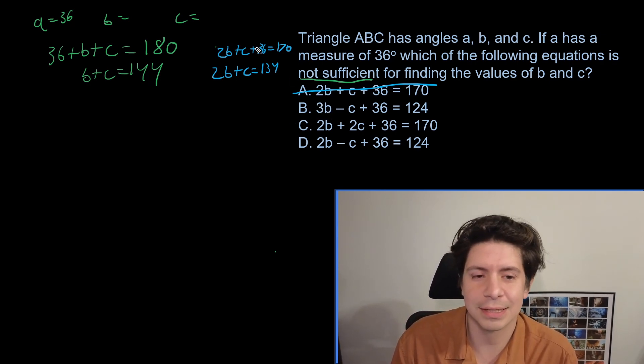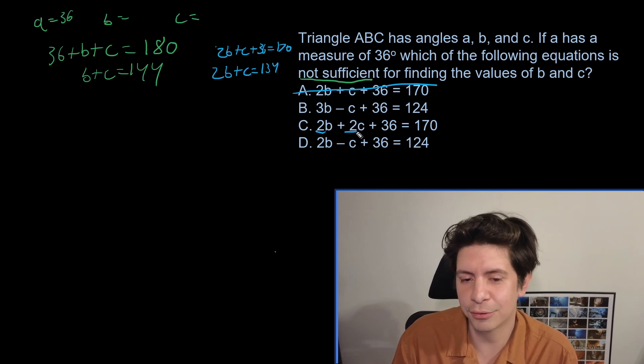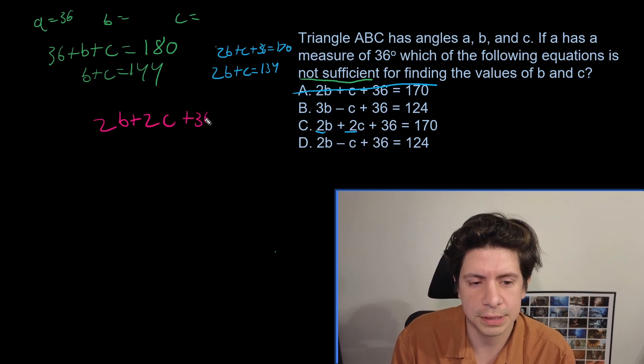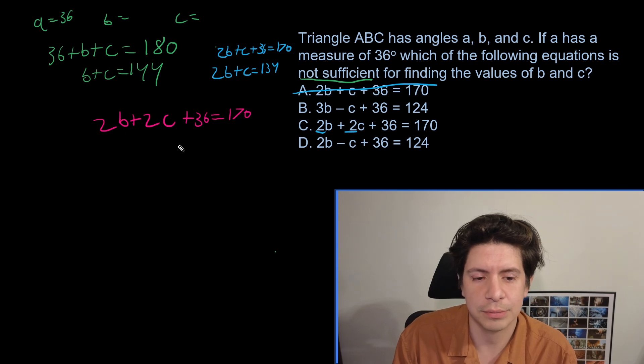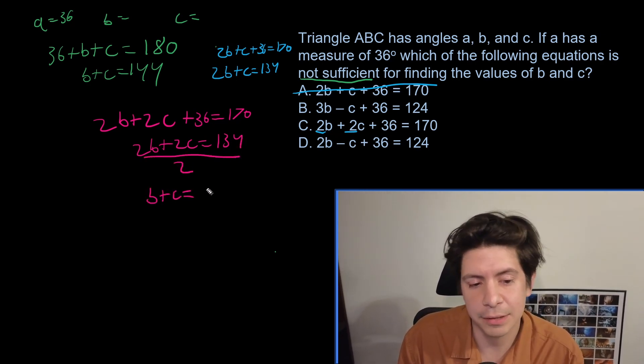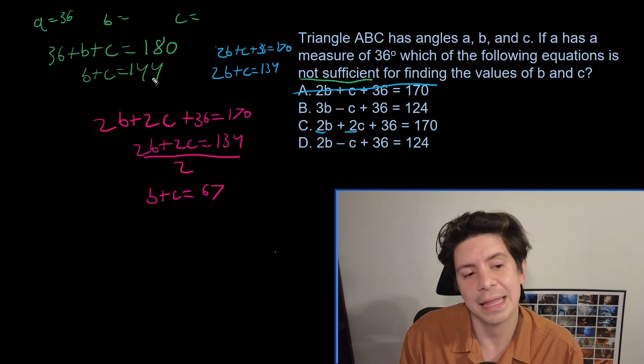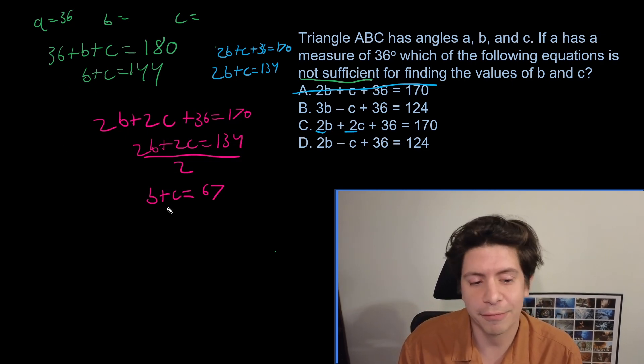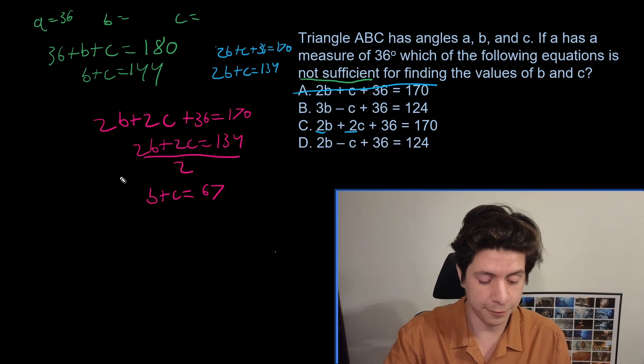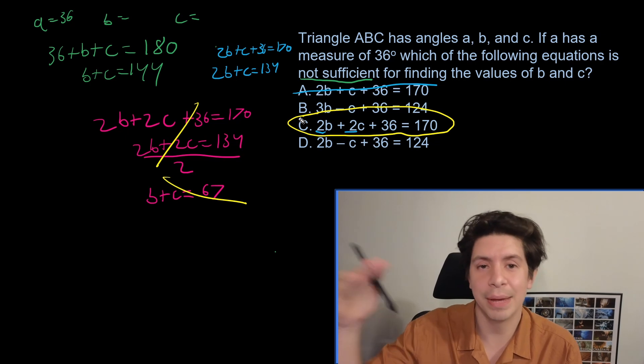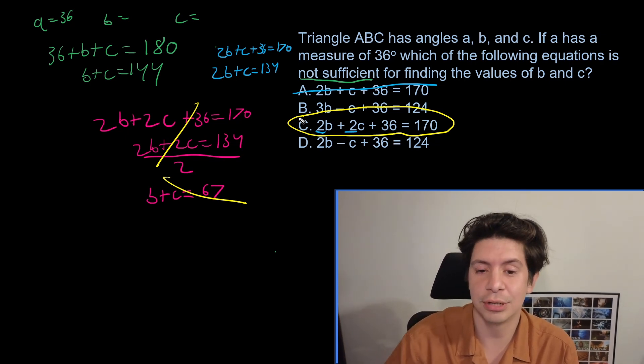So B looks like it's going to be a similar thing to A, but then C is interesting because the two variables are the same. So let's see what happens with C. 2B plus 2C plus 36 equals 170. We subtract by 36 and we get 2B plus 2C equals 134. Divide by 2 and we're going to get B plus C equals 67. The numbers are different, but the B plus C is the same. So these would be parallel lines if we graph them out. So we would get no solution. So it has to be C because that's the one that won't work because it gets us back to B plus C just like the original equation. You need to have different variables.